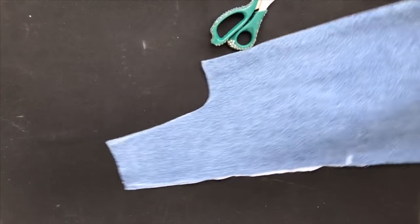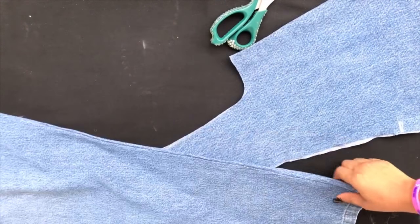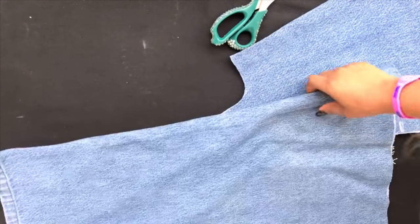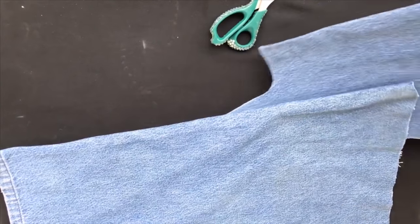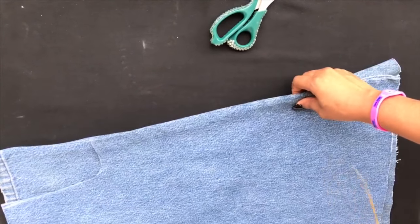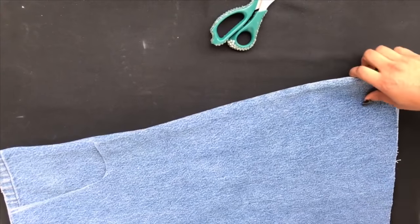So when you're done with that, place the front and just copy out the back. You don't need any more measurements for this. Just place the front on top of the other part of the jeans and trace it out. That's all.